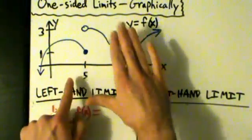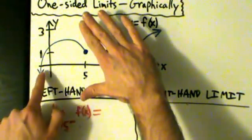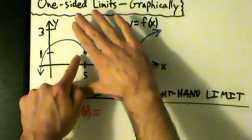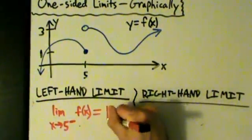So as x goes to 5 from the left, what's happening to the y values? Well, follow along this curve here, following along. And it looks like the y values are going to go to 1, right? So the answer to this would just be 1.